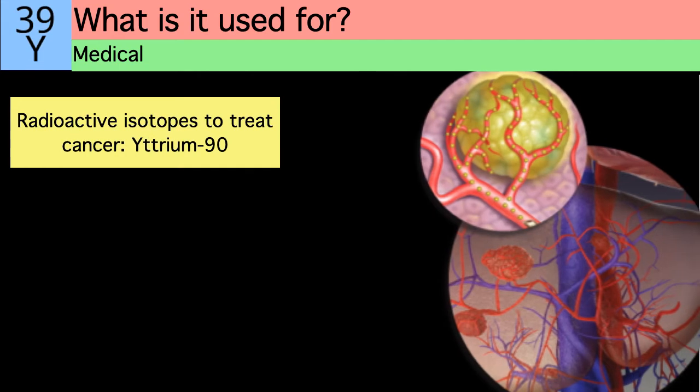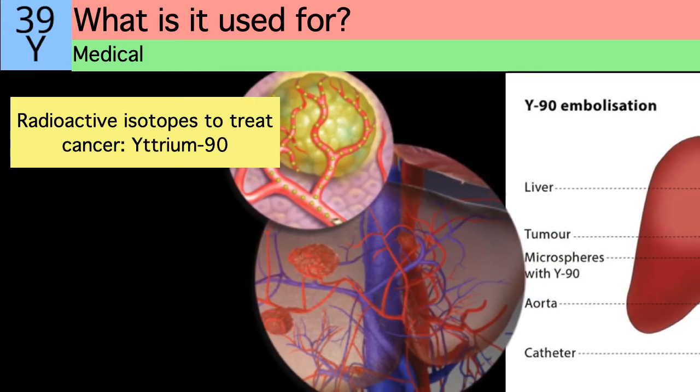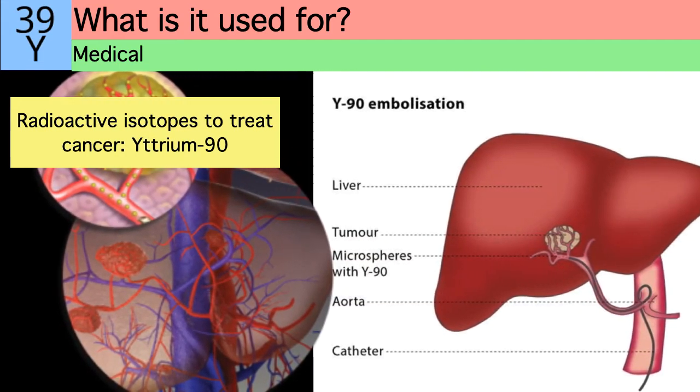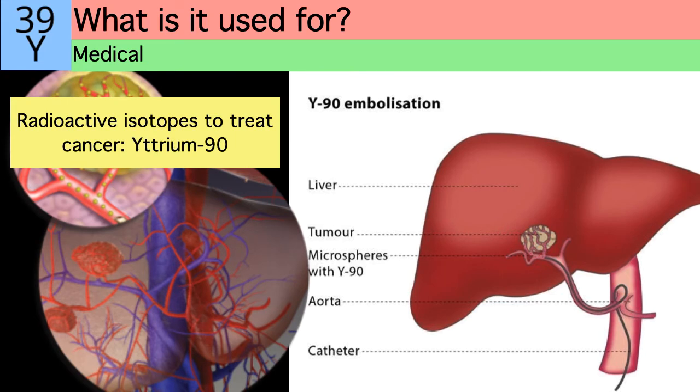The radioactive isotope yttrium-90 is used in the treatment of various cancers. An interventional radiologic technique called radioembolization is used to treat liver carcinoma and liver cancer metastases.